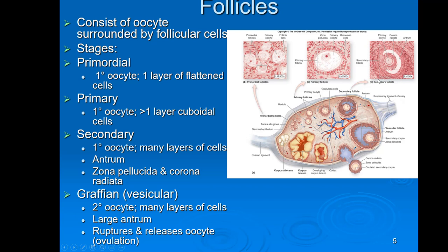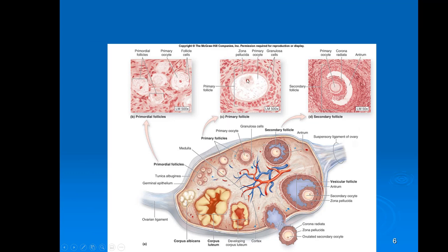The secondary follicle progresses into a mature follicle — the graafian follicle, sometimes called vesicular. It looks similar to the secondary but is bigger and now contains a secondary oocyte, which means the egg is ready to go. It has the big antrum, corona radiata, zona pellucida, and a secondary oocyte ready to be released. When it's released, that's called ovulation, and that normally occurs about every 30 days.